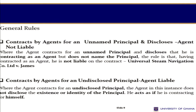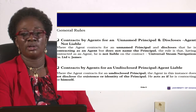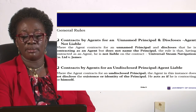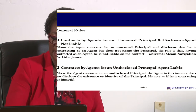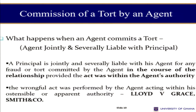What if he doesn't disclose the principal at all? He just goes and acts, knowing it is for somebody, but doesn't disclose to the third party that he is acting for somebody. In that instance, he would be held personally liable for the obligations arising under the contract and for any breach.